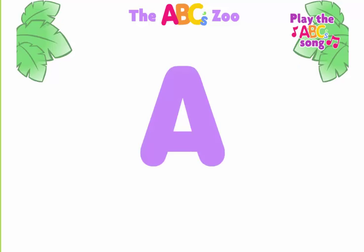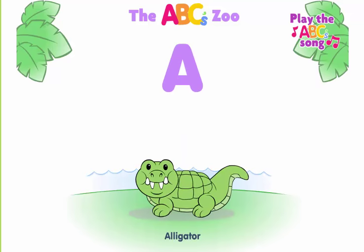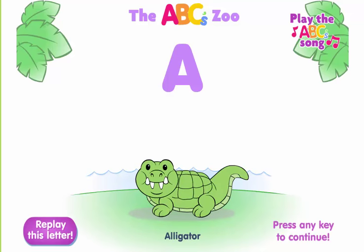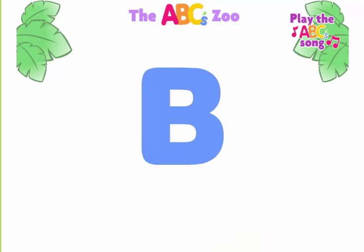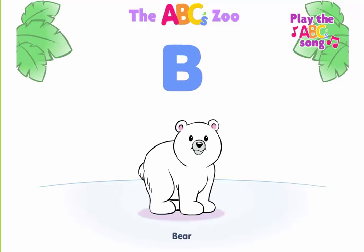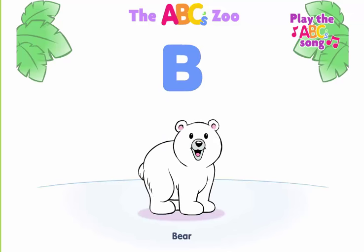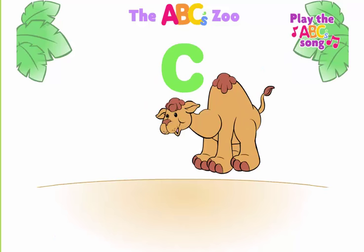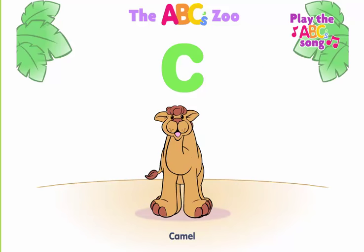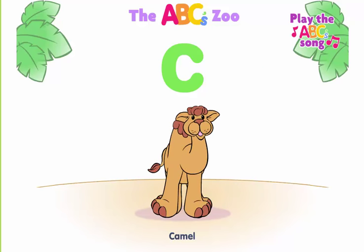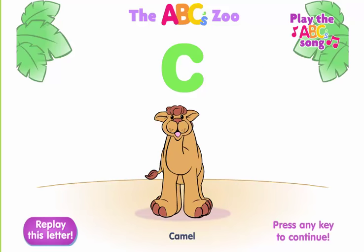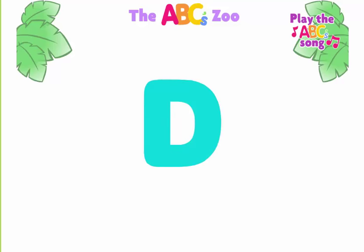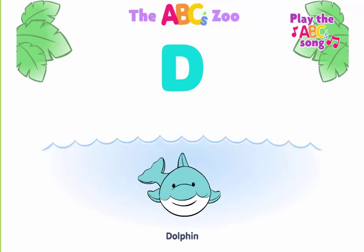A, alligator begins with A. B, bear begins with B. C, camel begins with C. D, dolphin begins with D.